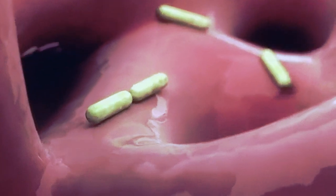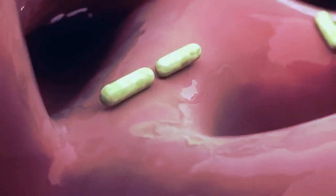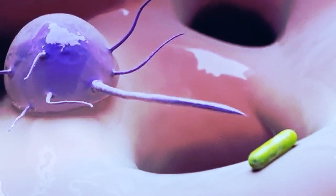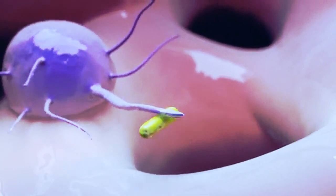Once in the alveolar sacs, the bacteria begin to multiply. The body's immune system starts working and macrophages begin to surround the bacteria.